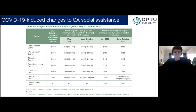From May to October, all grants were topped up by 250 Rand, whereas the child support grant in May was topped up by 300 Rand per grant, but from June to October it's been topped up by 500 Rand per caregiver. This has important implications for the amount of resources distributed to low-income households with differing numbers of eligible children. This was likely because there were vocal calls to top up the child support grant, given that a large proportion of informal sector workers co-reside with child support grant recipients.